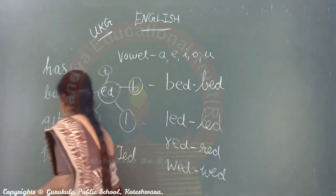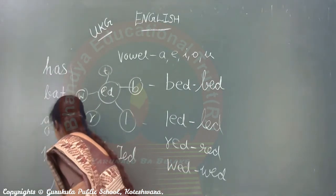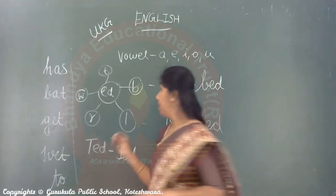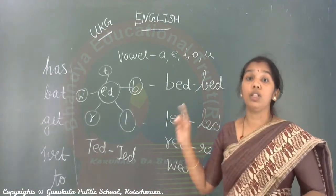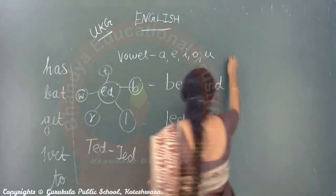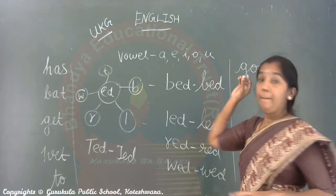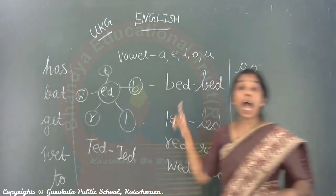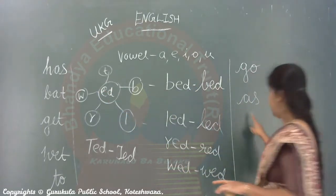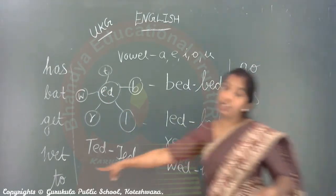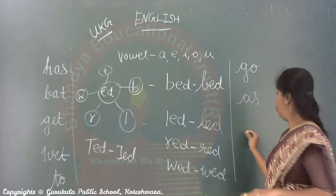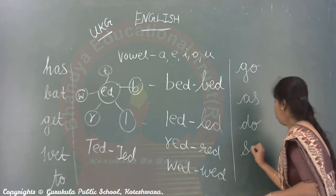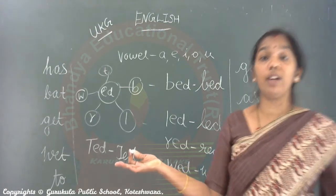There are two-letter words. T-O is 'to'. G-O is 'go'. A-S is 'as'. H-A-S is 'has'. T-O is 'to'. D-O is 'do'. And S-O will be 'so'. Your pronunciation should be perfect in this.